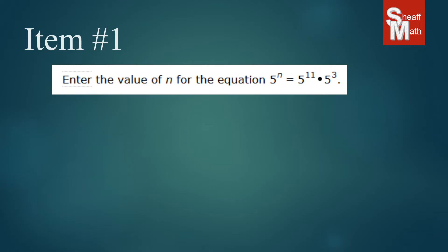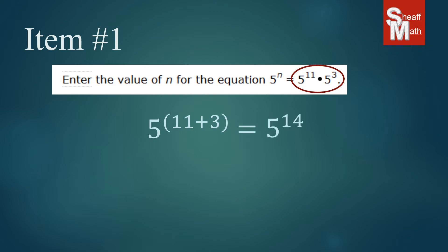What we want to focus on first is 5 to the 11th times 5 to the third. We're multiplying powers with the same base — they both have a base of 5. The easy way to do it is to just add the exponents together: 5 to the 11 plus 3, which makes 5 to the 14th.